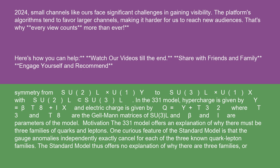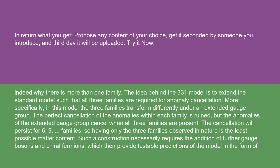The 331 model offers an explanation of why there must be three families of quarks and leptons. One curious feature of the standard model is that the gauge anomalies independently exactly cancel for each of the three known quark-lepton families. The standard model thus offers no explanation of why there are three families, or indeed why there is more than one family. The idea behind the 331 model is to extend the standard model such that all three families are required for anomaly cancellation.